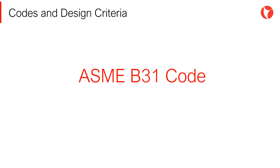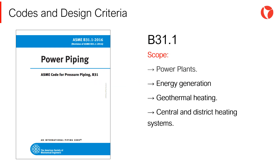In piping systems, the most commonly used design codes are those of the ASME B31. The piping design code ASME B31-1 is applicable to power plants, energy generation plants, geothermal heating, and central and district heating systems.